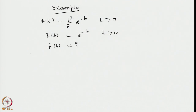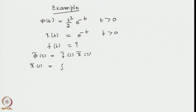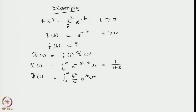What is required is the signal function f(t) which gave the output phi(t). We use the convolution theorem which says phi-tilde(s) equals f-tilde(s) times r-tilde(s). Now r-tilde(s) is simply the Laplace transform of e to the power minus t, which is the integral from 0 to infinity of e to the power minus(s+1)t dt, giving 1 divided by (1 plus s). Similarly, the Laplace transform of the output function is 1 divided by (1 plus s) cubed.